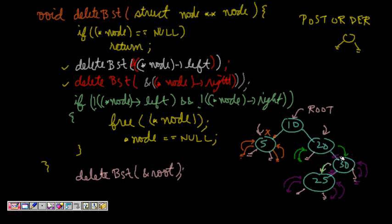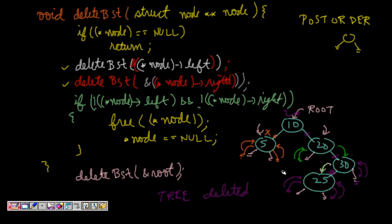Now at the root level, node->left is null and node->right is null, so we free the root node and make it null. The whole tree is now deleted — all nodes are freed. This was about deleteBST. I hope you understand this code. Thanks a lot! If you like this video lecture, please subscribe to my channel. Thank you.